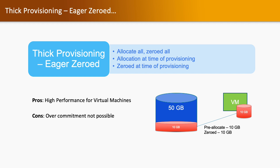Thick provisioning eager zeroed is faster and provides higher performance for the virtual machine. It allocates all space during provisioning and also zeroes the complete disk during provisioning. When you assign storage space from the datastore to the virtual machine, it allocates all space and zeroes the disk at the same time, then assigns it to the virtual machine. This enhances performance as all space is pre-allocated and zeroed during provisioning.